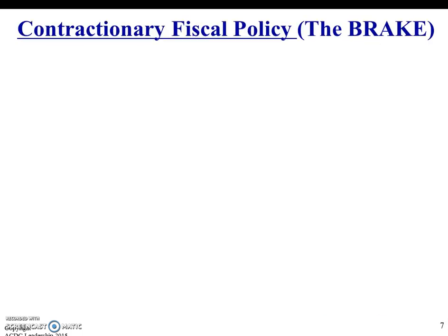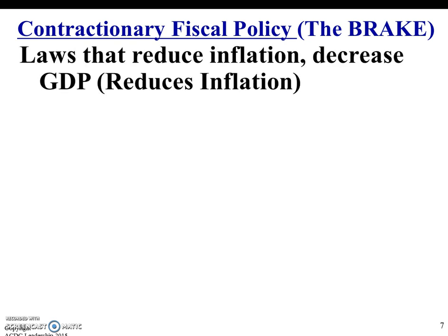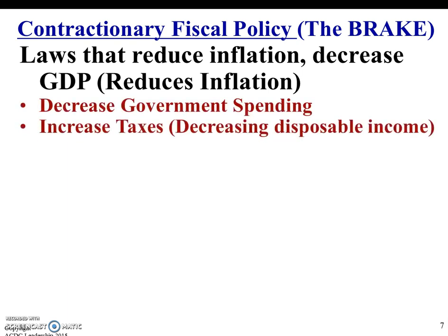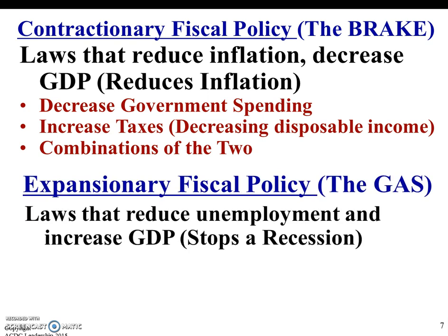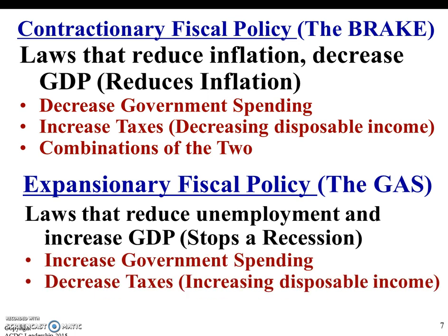Contractionary fiscal policy would be the brakes — think about the car. This is when we want to slow the economy down. These are laws that reduce inflation and decrease GDP. We want to decrease government spending, increase taxes — which decreases how much money we have in our paychecks — or do both. Then you have expansionary fiscal policy, which is the gas. We want to get the economy moving. These are laws that reduce unemployment and increase GDP, so we increase government spending, decrease taxes, or do both.